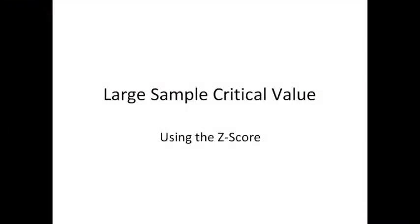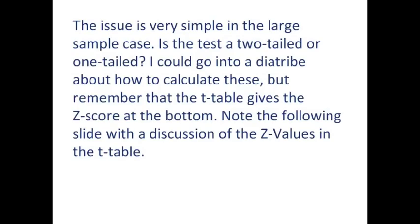One of the first things that we need to do is to calculate large sample critical values using the Z-score. I'm going to show you how to do that using a T-table, which is really pretty clever. The issue in looking for a critical value is very simple in the large sample case: is the test a two-tailed or one-tailed test?